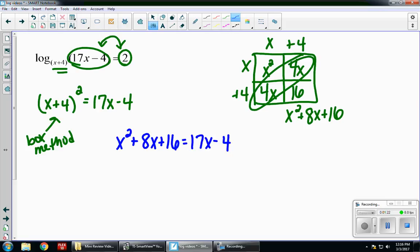Now, remember, whenever we have an x squared, you want to set it equal to 0 so that you can solve. So, in order to do that, I'm going to subtract 17x on both sides, and at the same time, I'm going to add 4. The right side is going to cancel and give me that equal 0 that I'm looking for. On the left side, I'm going to end up with x squared minus 9x plus 20.